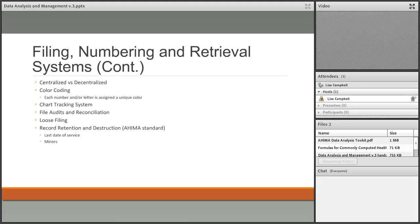Centralized filing means all records are stored on-site, usually in one place such as the basement. Decentralized means the organization ran out of room and stores records at multiple locations — a storage facility or another office. That's all decentralized means: records are stored in more than one place.